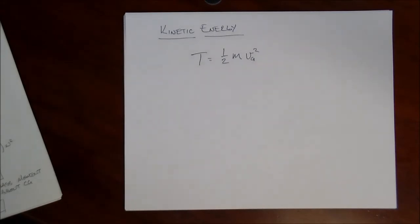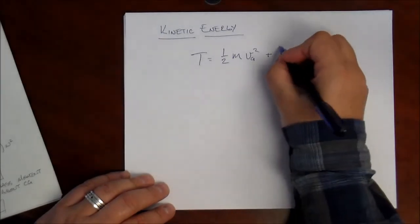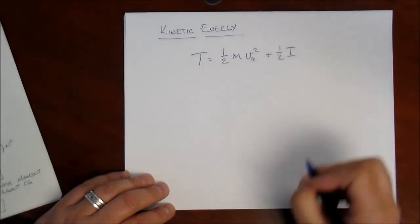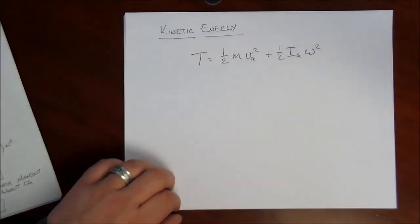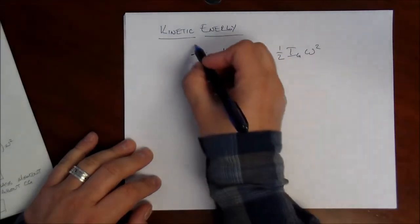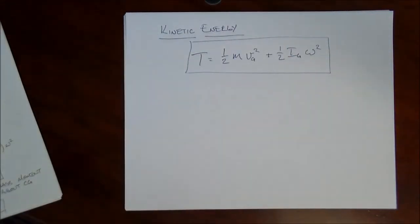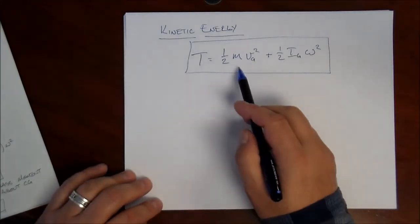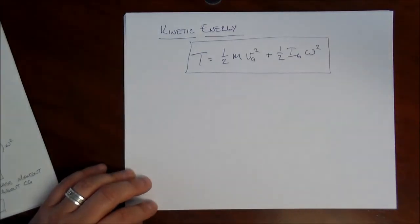So we have to consider the rotational aspects of their kinetic energy. So, we add to this one-half i, the mass moment of inertia about the mass center g times omega squared, the angular velocity. And so, that is an expression for the kinetic energy of a rigid body in plane motion. We have to consider the translational kinetic energy and the rotational. They both contribute to the kinetic energy.